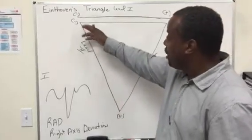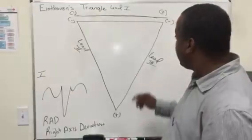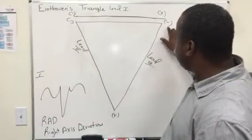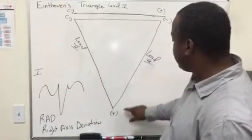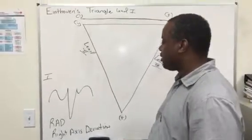All right. So lead 2, current flows negative to positive. All current travels negative to positive. Lead 1 is opposite. It goes positive to negative.